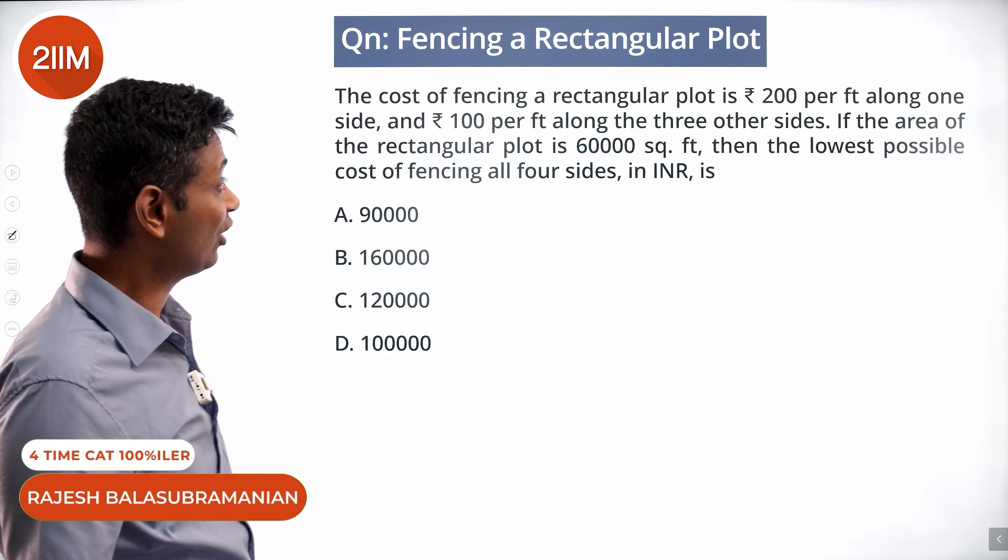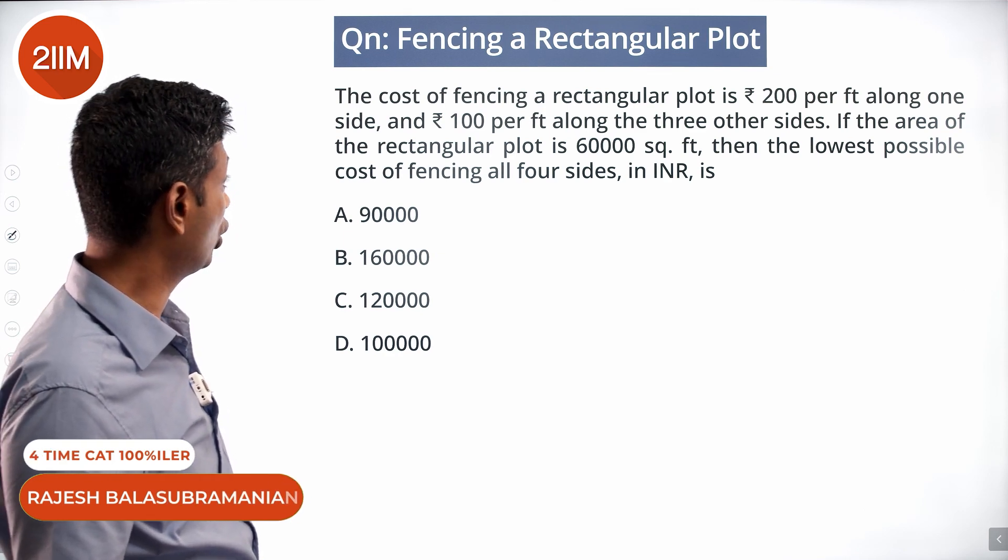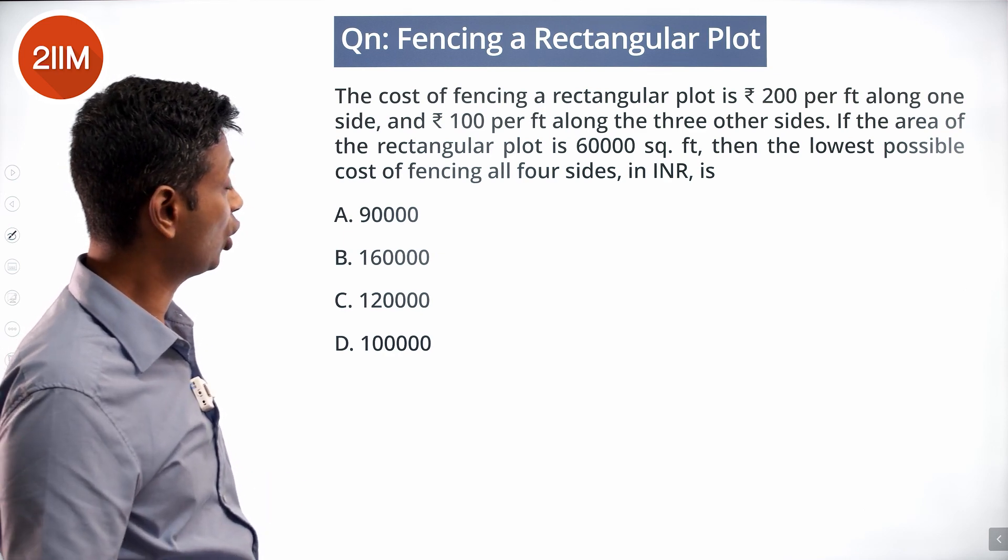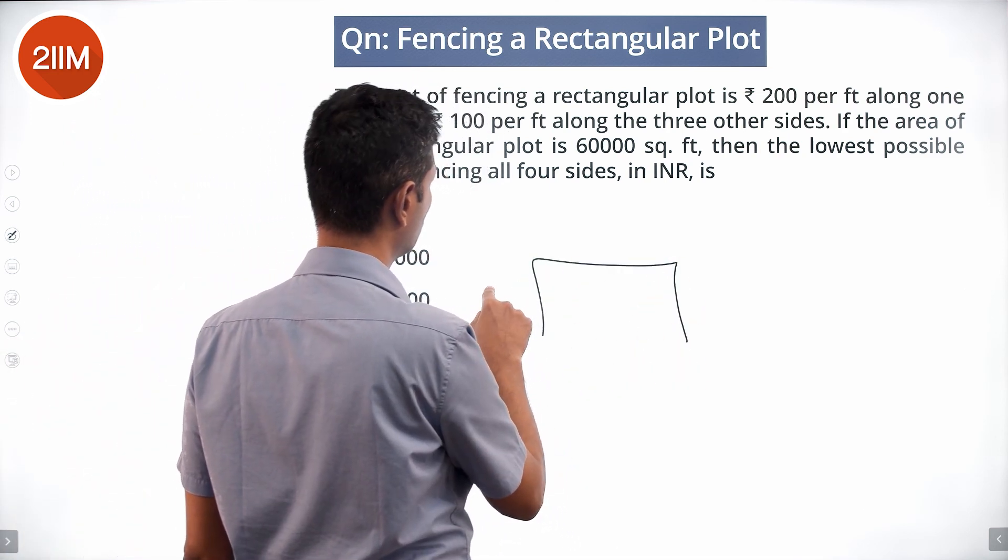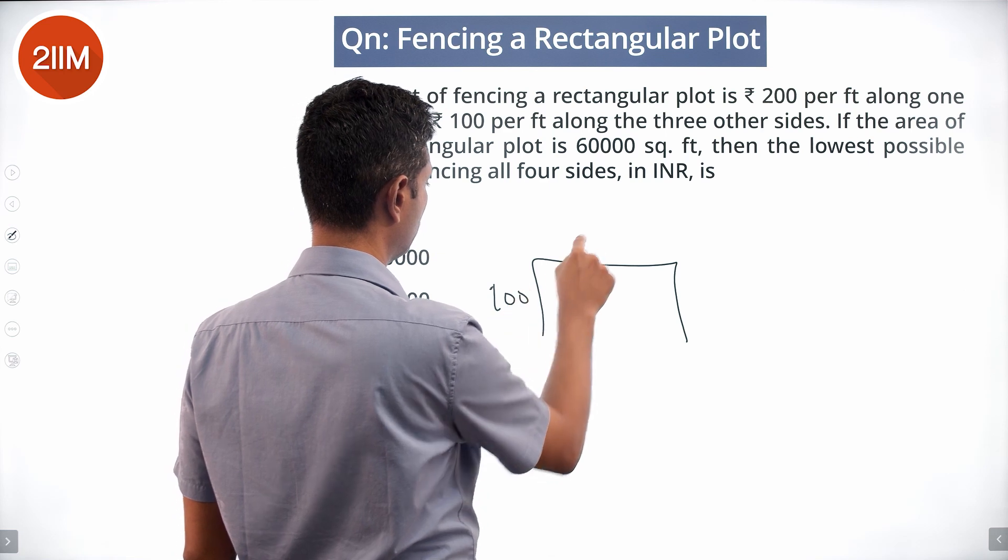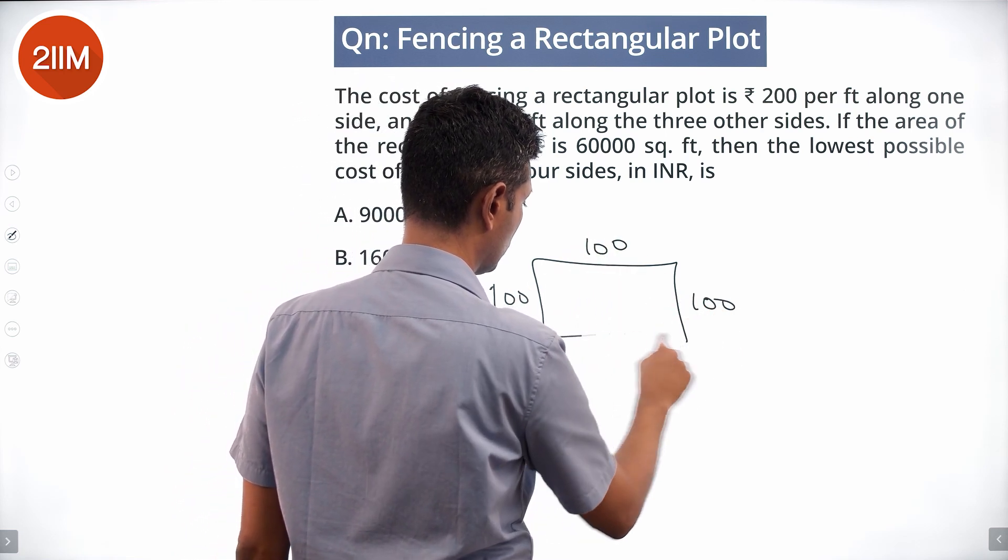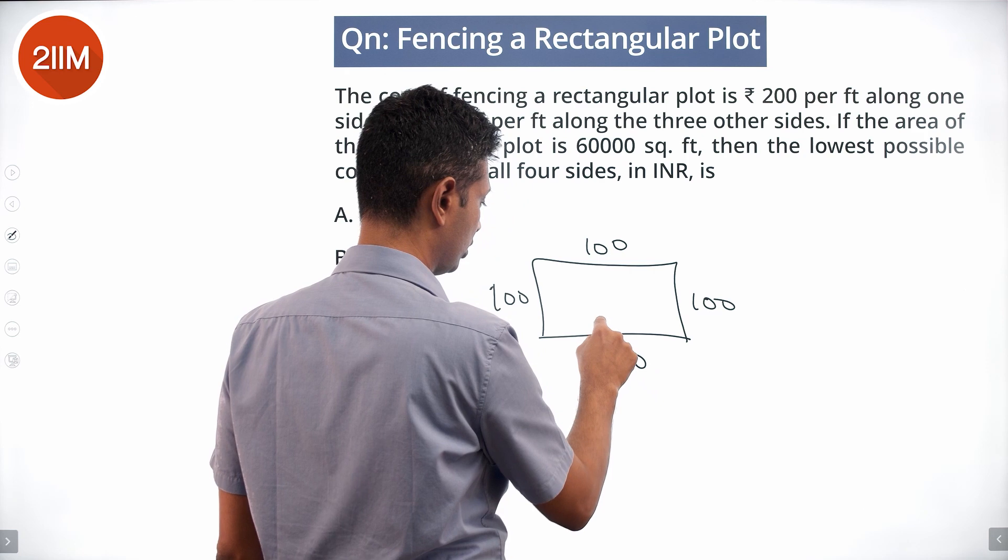The cost of fencing a rectangular plot is 200 per feet along one side and 100 per foot along the other three sides. This is 100 per foot, 100 per foot, 100 per foot, and 200 per foot.